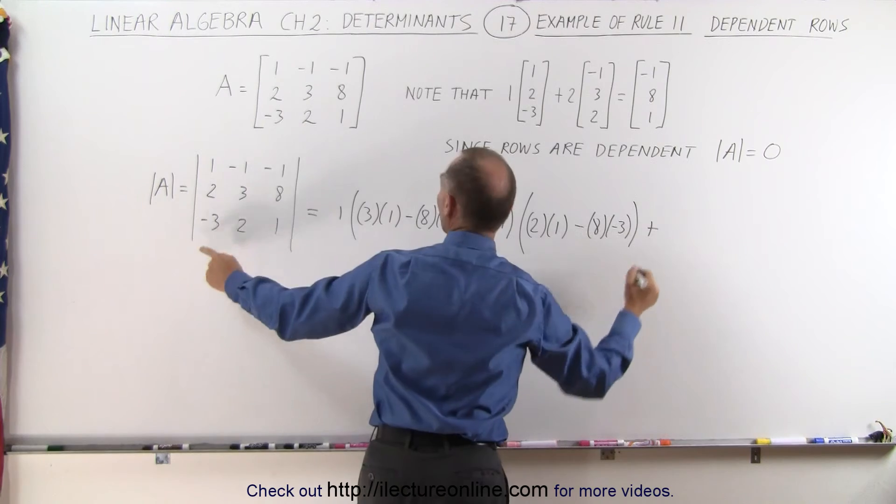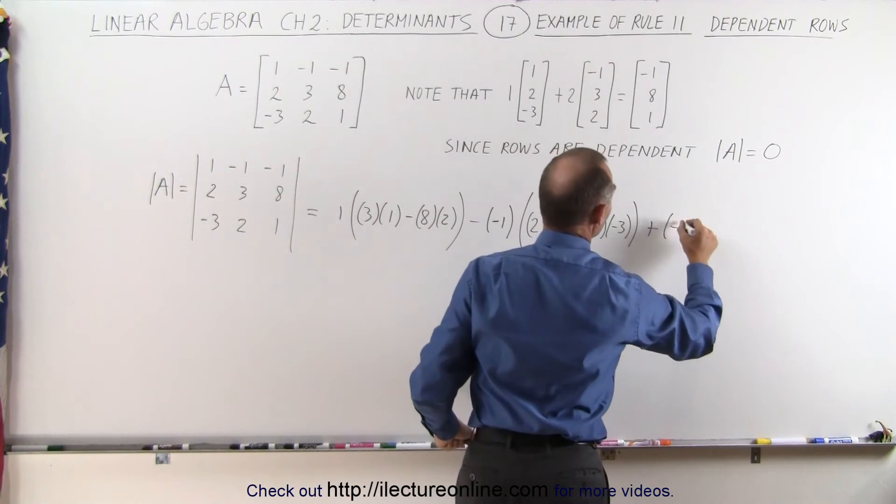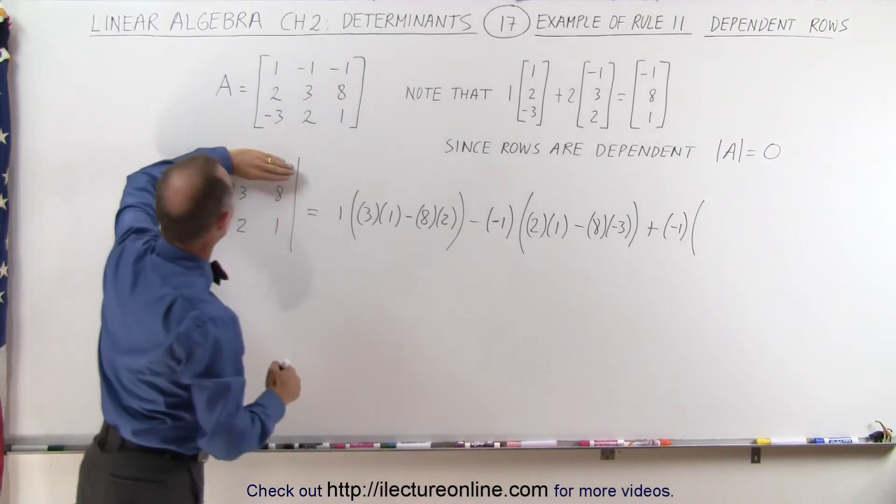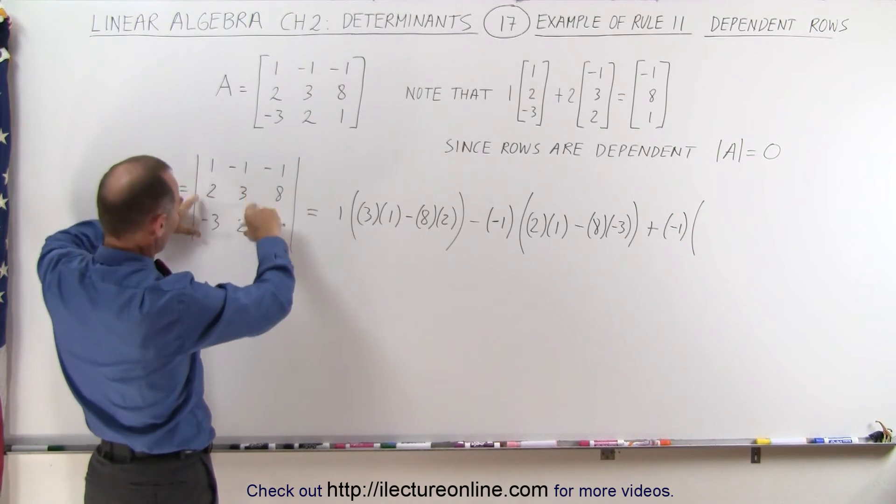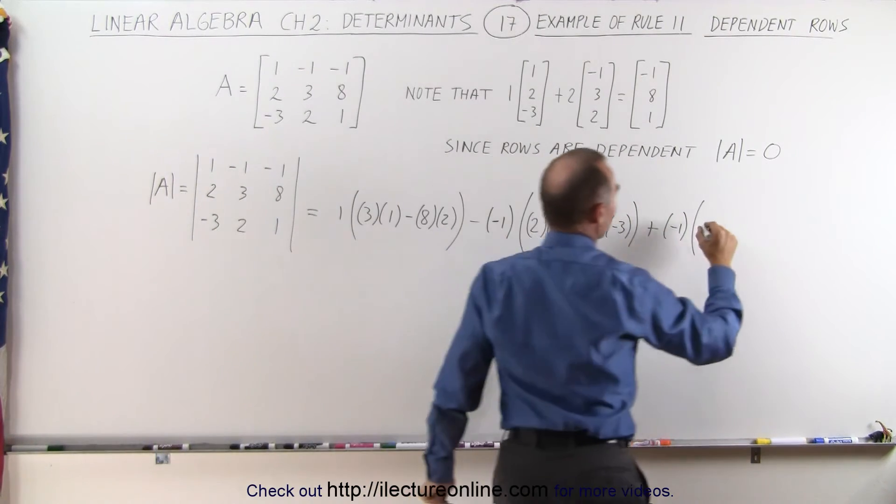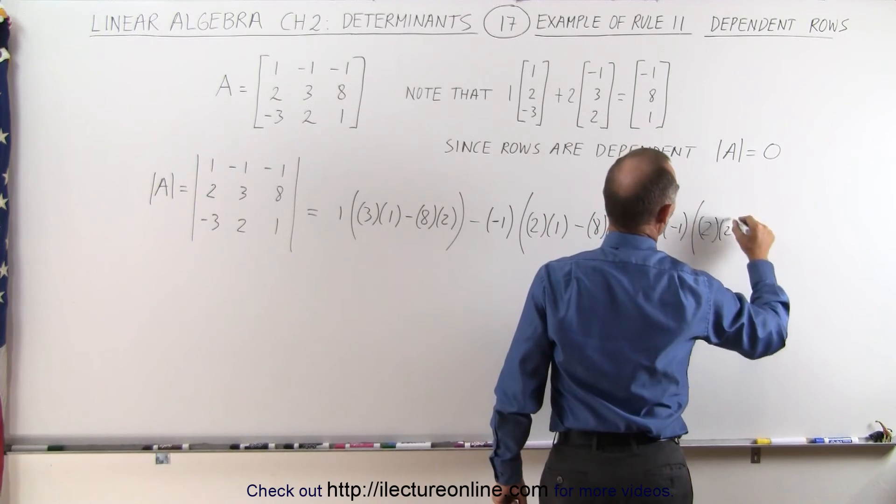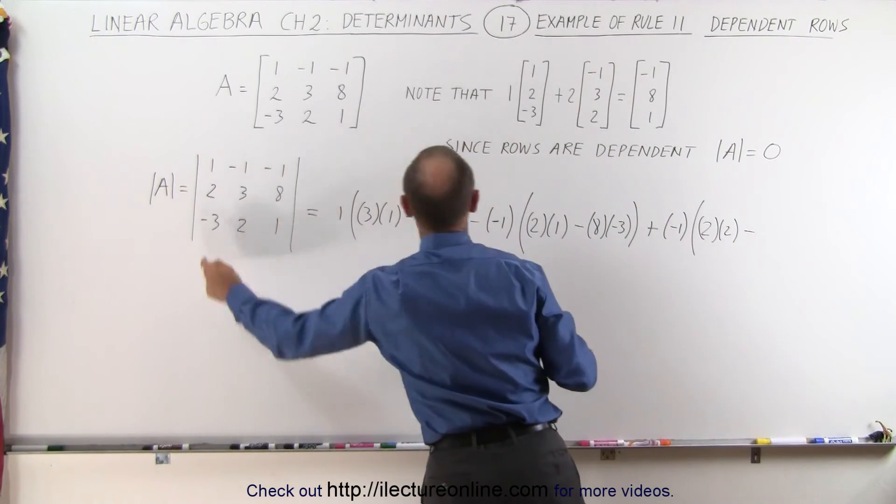And then plus the third element, which is a negative 1, times, when we get rid of this row and this column, we end up with those four elements, we get 2 times 2 minus 3 times a negative 3.